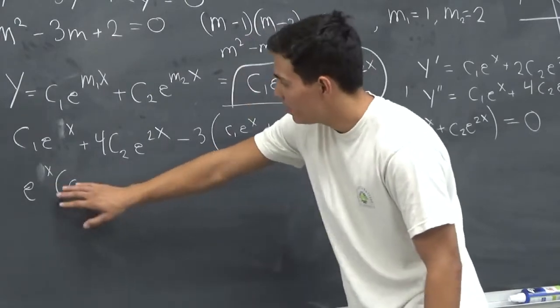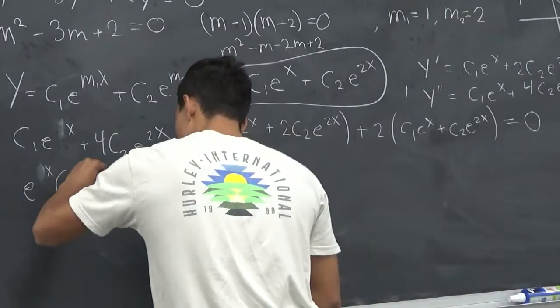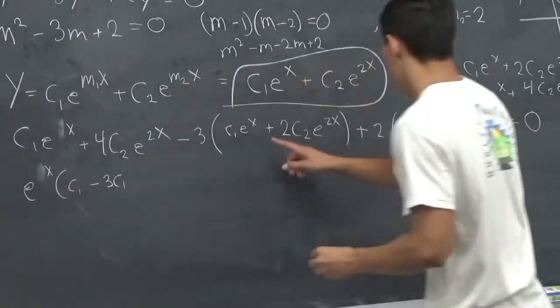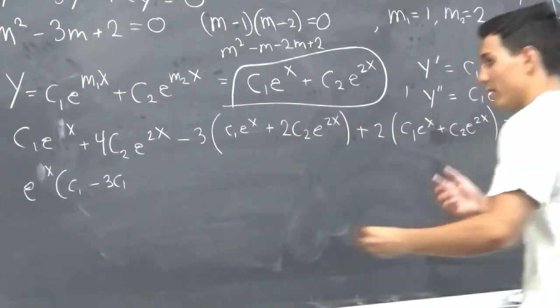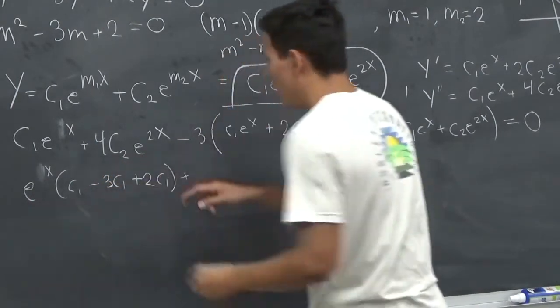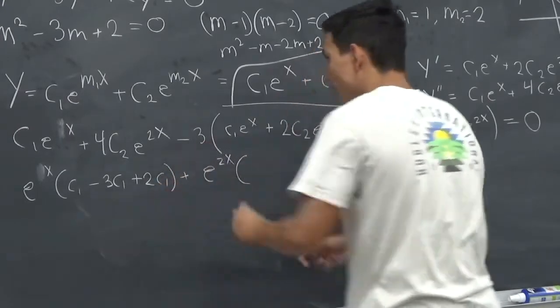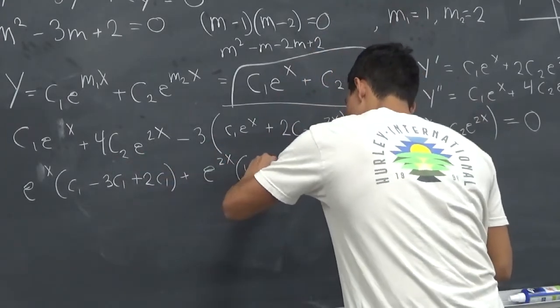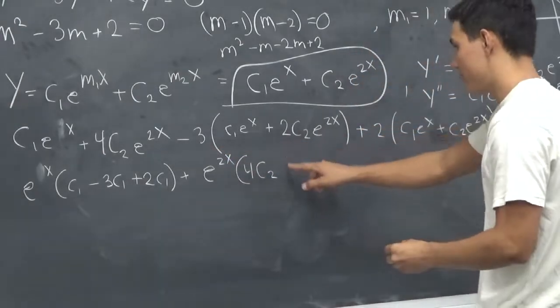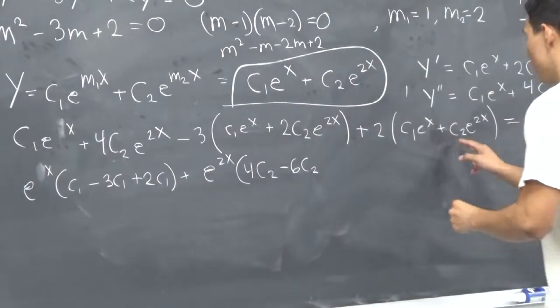Let's just count all the e to the x's, group them all together. So we have a C1, and we have a negative 3 C1, and then we have a plus 2 C1. And then let's group all the e to the 2x's here. And we have a 4 C2, and then we have a negative 6 C2, and then we have a 2 C2.